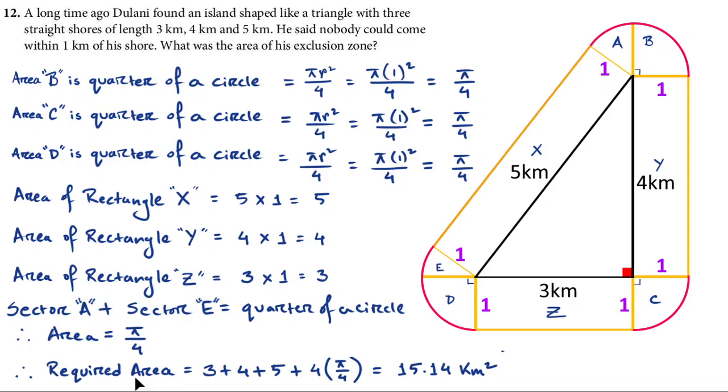So the required area is equal to 3 plus 4 plus 5 plus 4 times pi by 4, which is B, C, D plus A and E. So we have pi by 4 four times so we can simply multiply it in order to get the area for the exclusion zone and that will give us the value of 15.14 kilometer square.